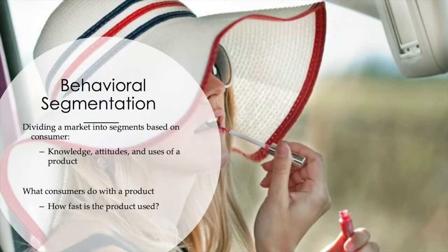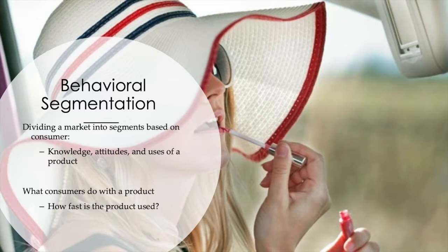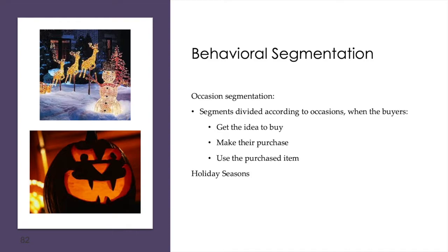We can also look at behavioral segmentation — how much usage there is. Think of the line in geometry: it's infinite. The only way to measure it is to make a line segment. That's what we're doing — taking a huge population and segmenting it into smaller groups to find our best market. We look at how fast a product is used: how fast will lip gloss go? Will it last a month? Doubtful. Is it an every-two-week buy? Does that repeat business affect our sales? All of this goes into consideration, as well as occasion segmentation.